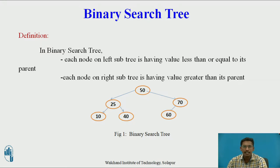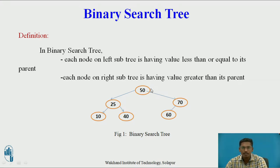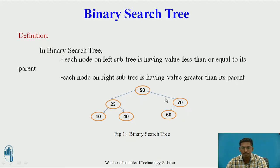Before going to searching directly, let's revise binary search tree. What is a binary search tree? In a binary search tree, each node on the left hand side has a value less than or equal to its parent, and each node on the right subtree has a value greater than its parent. For example, 50 is the root — all nodes on the left subtree have value less than or equal to 50, and all nodes on the right subtree have value greater than 50. This is the basic property of a binary search tree.